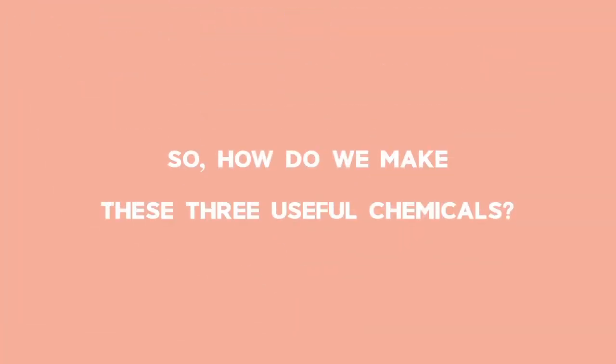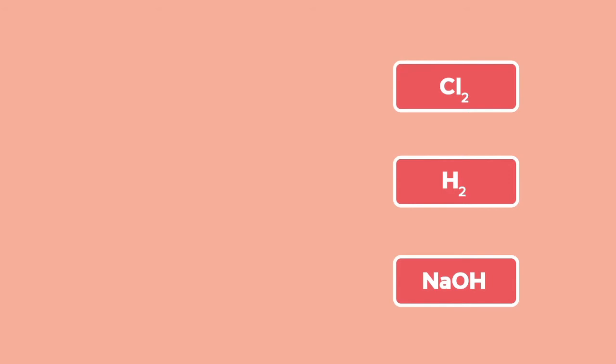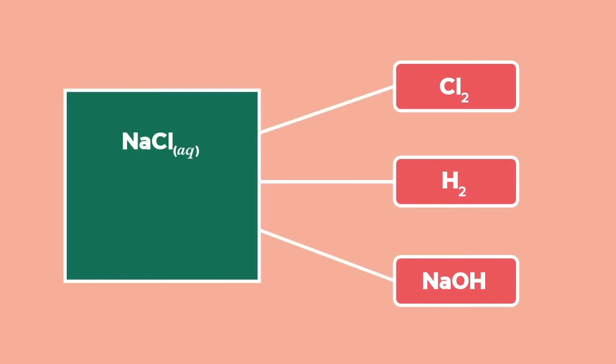So, how do we make these three useful chemicals? Well, the three types of cells now being used are all based on the same reactions. We use common table salt, refined from the sea or a lake bed, and use electrolysis of a saturated solution called brine.